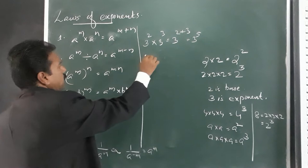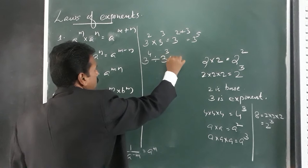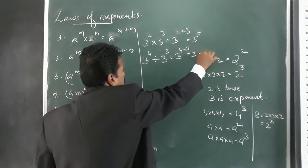Example two: 3 raised to 4 divided by 3 raised to 3 equals 3 raised to 4 minus 3, that is 3 raised to 1, which equals 3. We subtract the exponents.